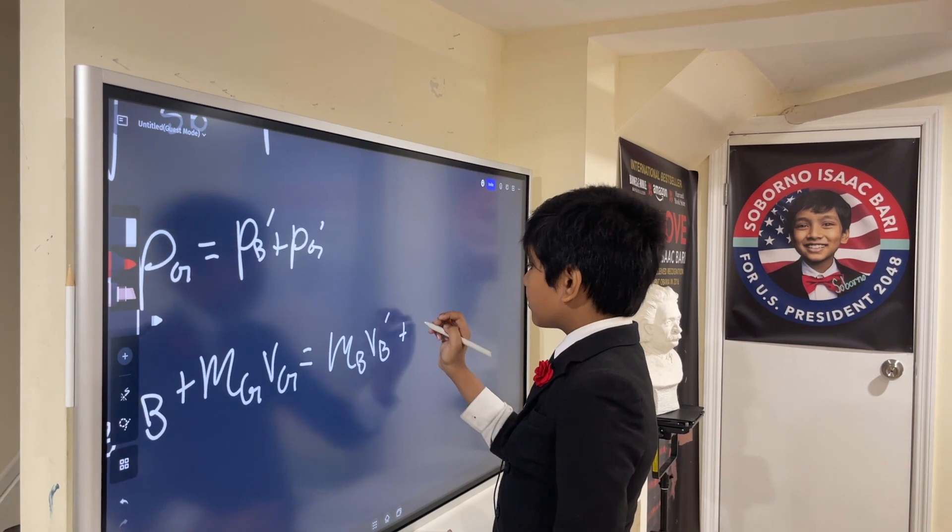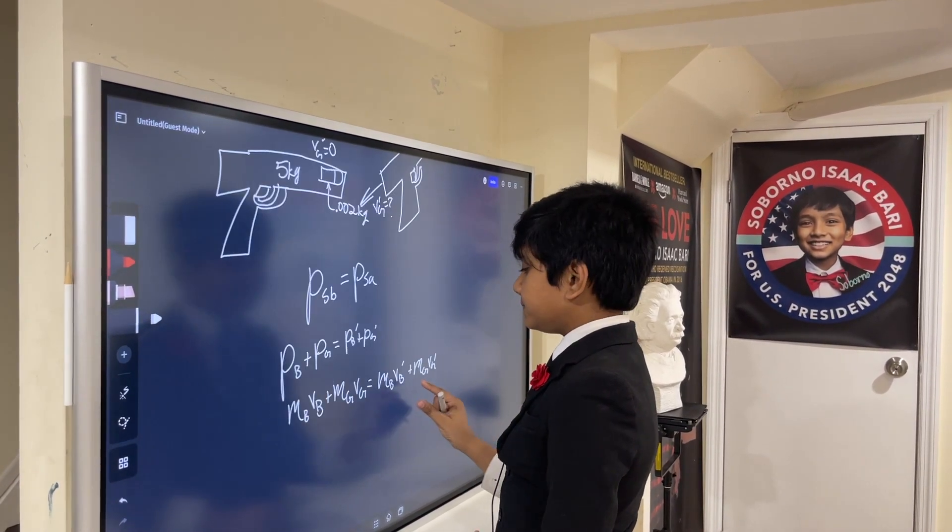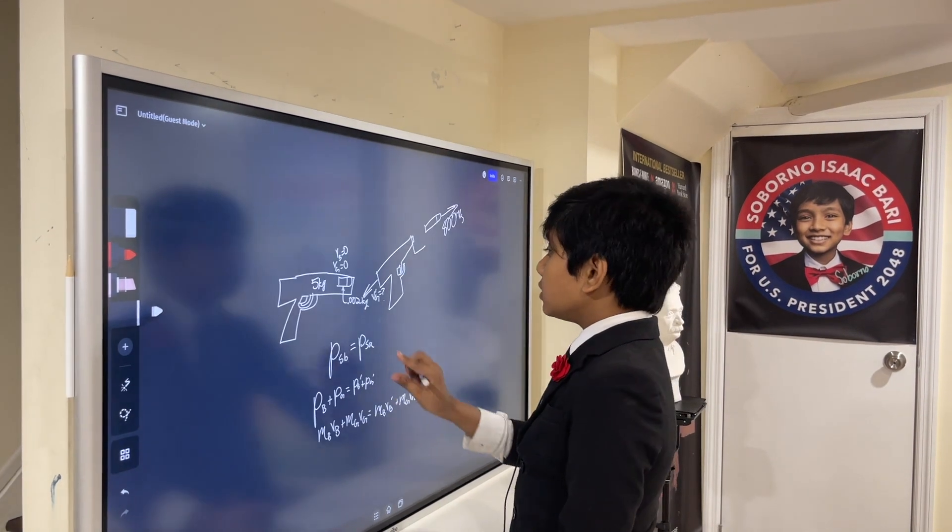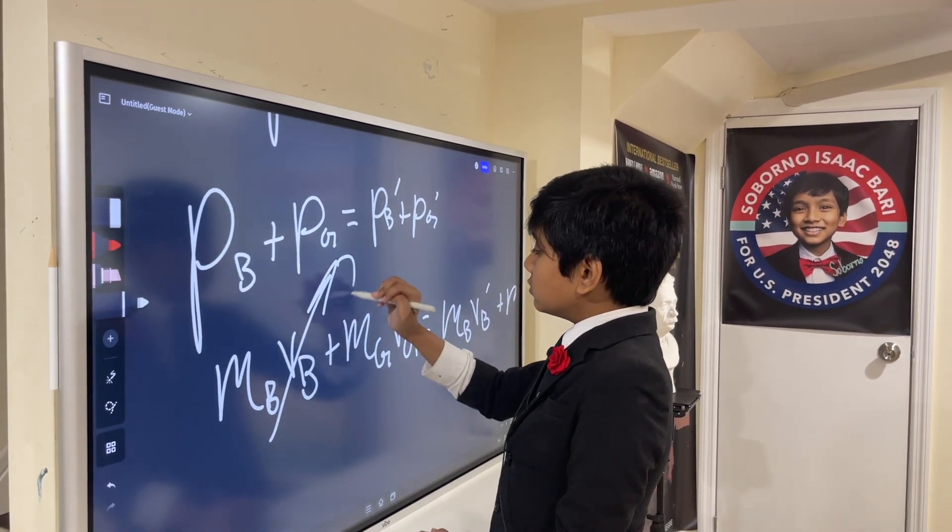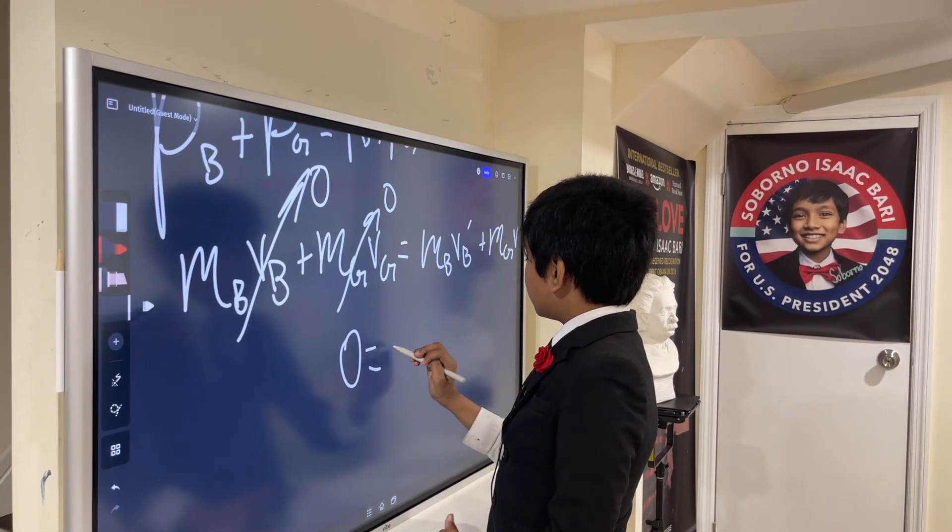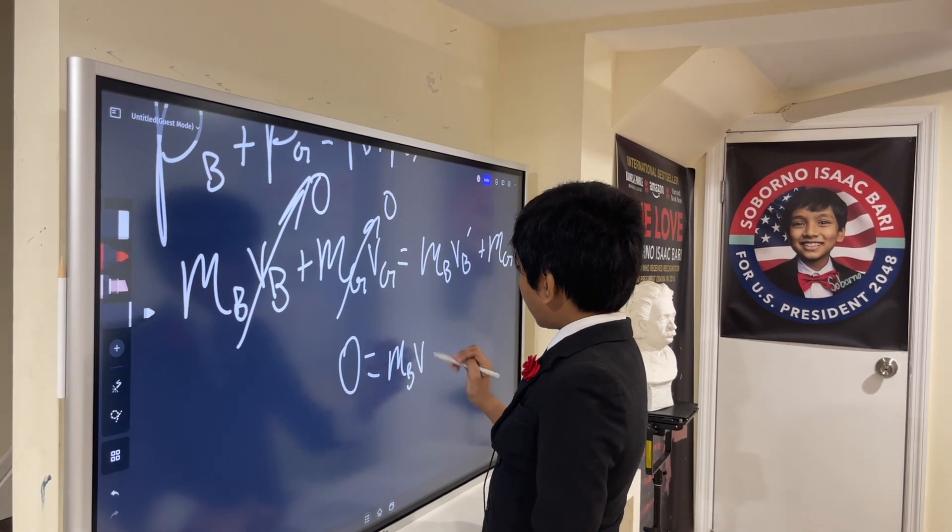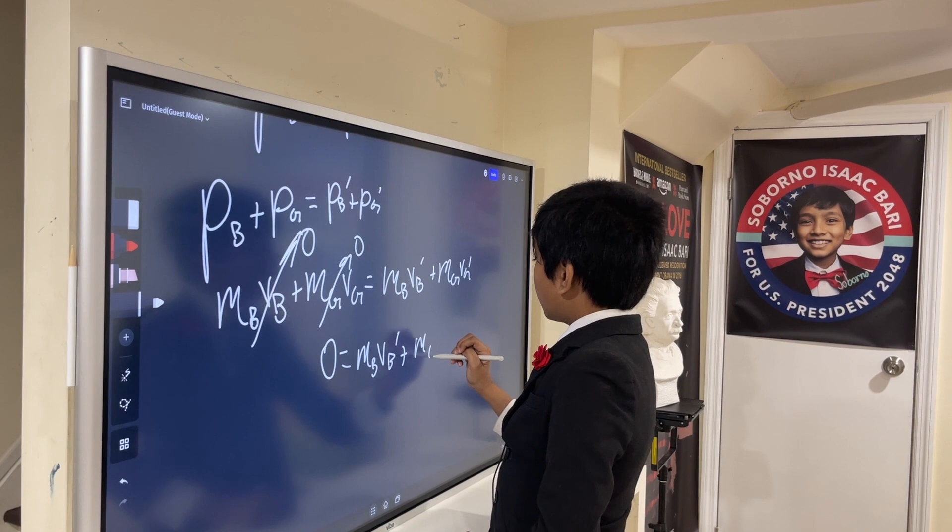And we have MGVG prime over here. So now, we know that initially here, VB and VG are both zero. So, we can just set these both to zero. And so, we see that we have this: MBVB prime plus MGVG prime.